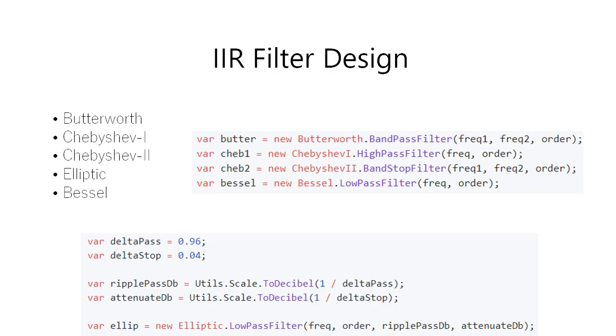Each of these filters is contained within its own namespace, and there is a class for every band form: low-pass, high-pass, band-pass, and band-stop.